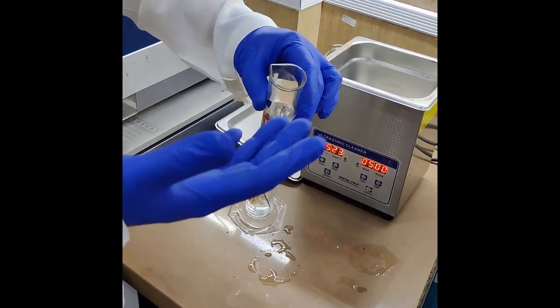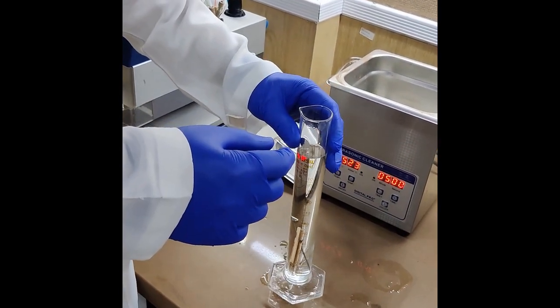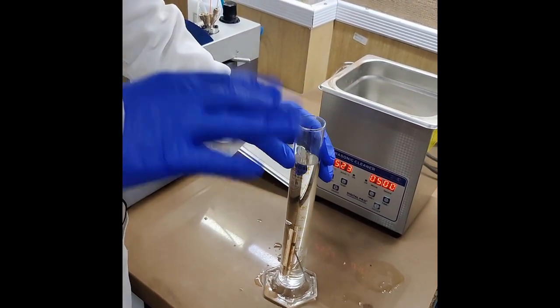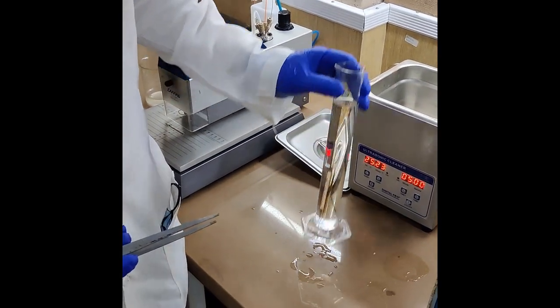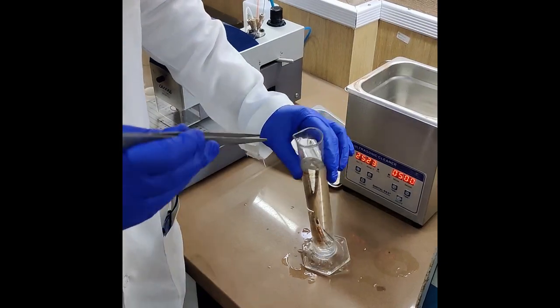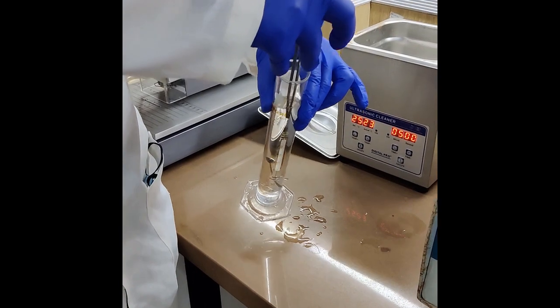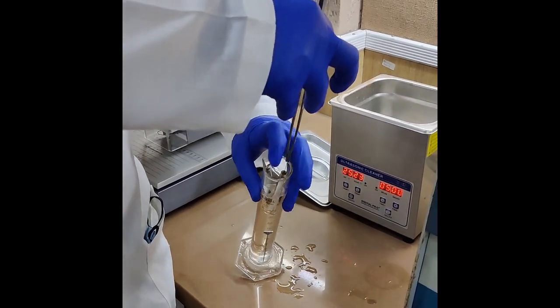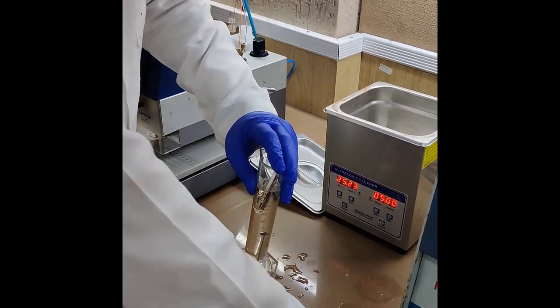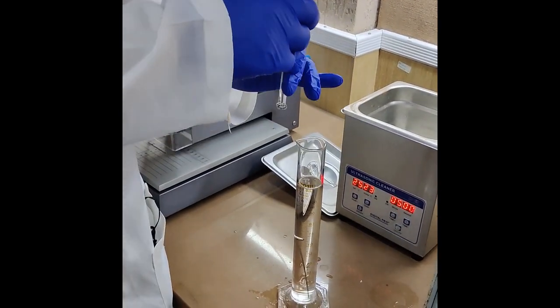You can do it with your hands or use a forcep. I have removed it from the sonicator with the help of forceps by slowly picking it up from the measuring cylinder and taking it outside. The same is repeated for the piston as well.